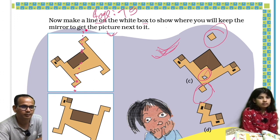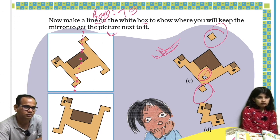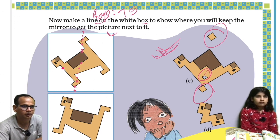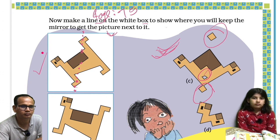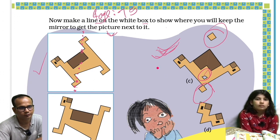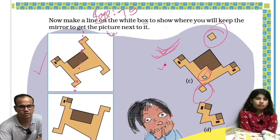So mirror image — we have to keep the mirror here on this dotted line. So this one we are done, and we will be getting this image.